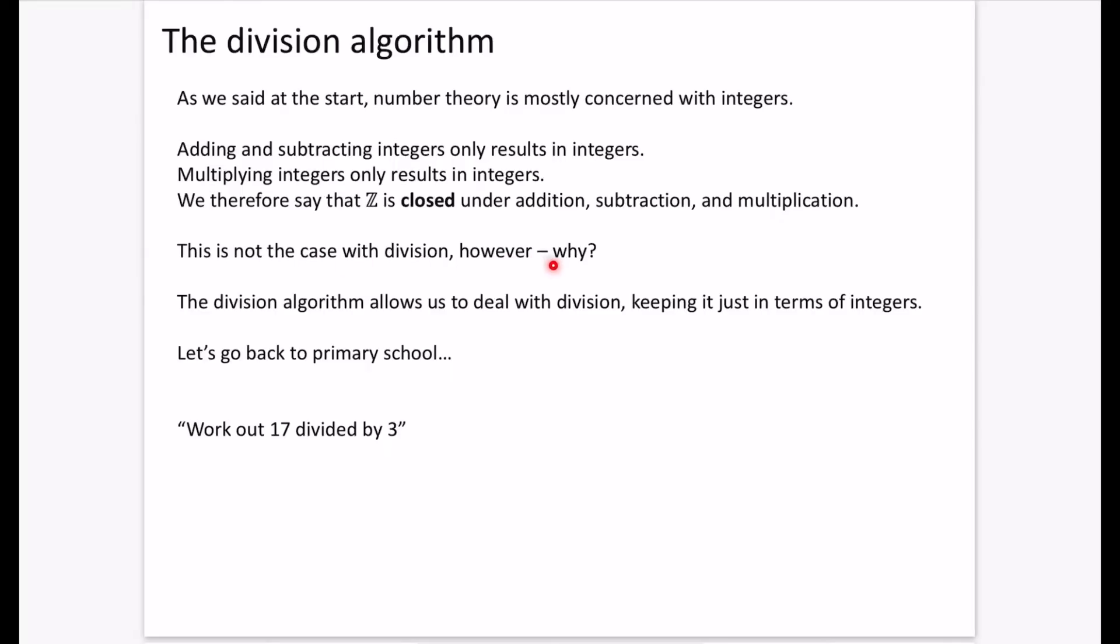But this is not the case with division, however. Why? Think to yourself, why is that not the case with division? Well, you could think of an example like this. If you did 9 divided by 2, that gives you 4.5. And so it is no longer closed because 4.5 is not an integer. When you do division with integers, you don't always get integers. Therefore, it is not closed. And this idea of things being closed will come up again in chapter two when you start looking at groups as well.